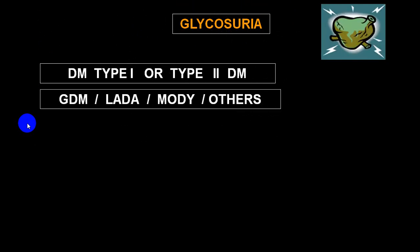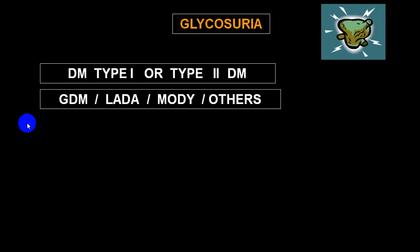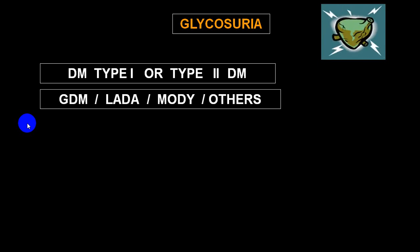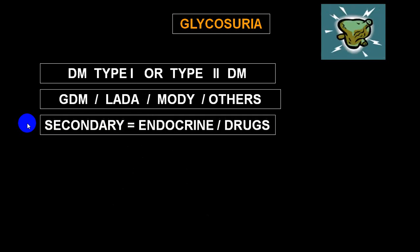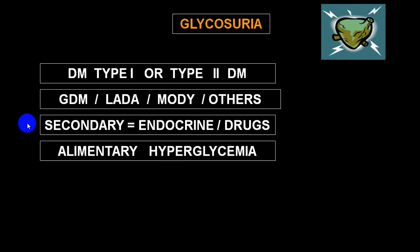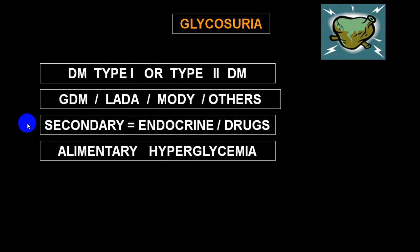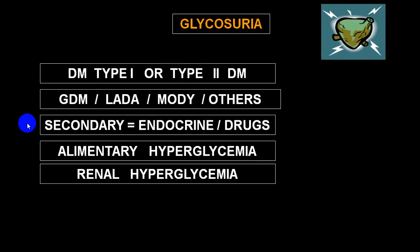The most common causes of glycosuria include diabetes type 1 or type 2, GDM (gestational diabetes mellitus), LADA (latent autoimmune diabetes mellitus in adults), MODY (maturity onset diabetes of the young), and secondary diabetes — which can be endocrine in origin or due to drugs. There is another condition called alimentary hyperglycemia, where after taking a high-carbohydrate diet, sugar is absorbed very rapidly from the GI tract causing severe hyperglycemia.